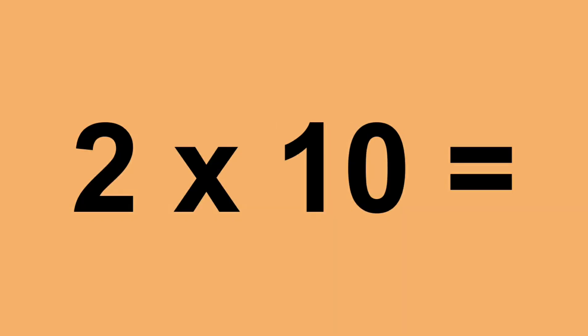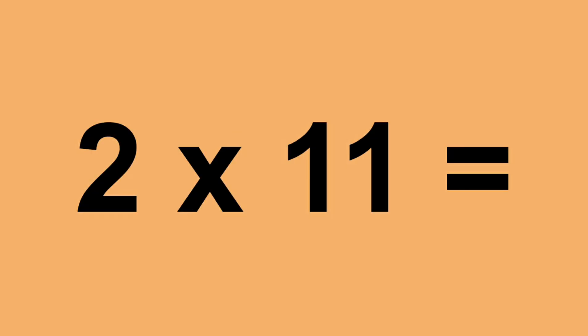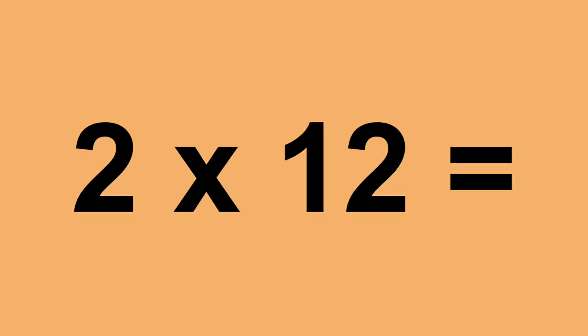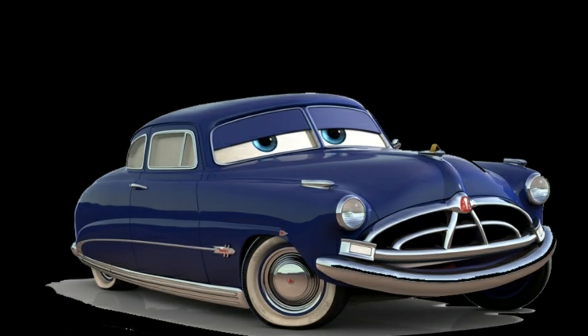Two times ten equals twenty. Two times eleven equals twenty-two. Two times twelve equals twenty-four.